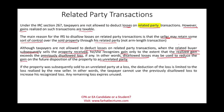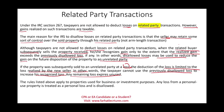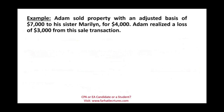If the property was subsequently sold to an unrelated party at a loss, the deduction of the loss is limited to the loss realized by the new seller. You cannot use the loss that was disallowed originally between related parties — your loss is the new loss. The taxpayer cannot use the previously disallowed loss to increase his or her recognized loss; any remaining loss expires unused. These rules apply to property used for business or investment. Any loss from personal use property is treated as a personal loss and not disallowed altogether.